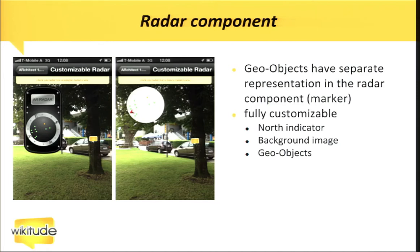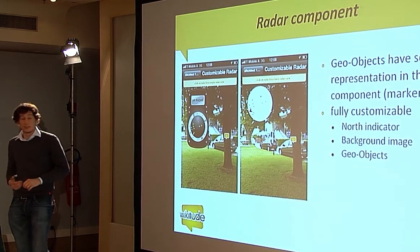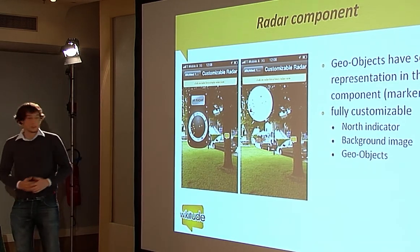The radar is a concept quite often used in augmented reality browsers. It's basically for user experience — the user has a way of knowing what objects are around them and in what direction. When the user turns the device, the radar rotates and shows the user where the points are and in what direction. We made it fully customizable: you can define what the background is, how the points look on the radar, and for example a selected point changes its representation. We also have a north indicator that moves around as the user turns the device, and that's also customizable.